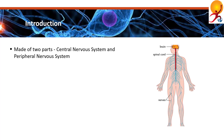The nervous system is made of two parts: the central nervous system and the peripheral nervous system. The central nervous system is made up of the brain, which contains the cerebrum, brain stem and cerebellum, and the spinal cord.